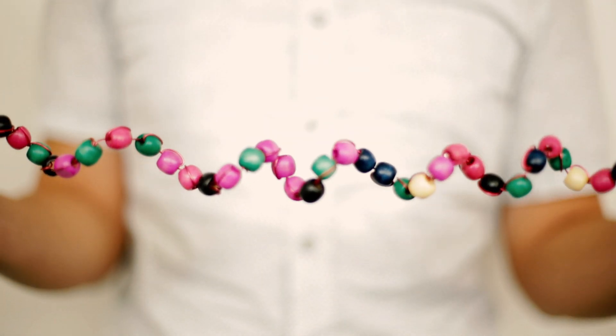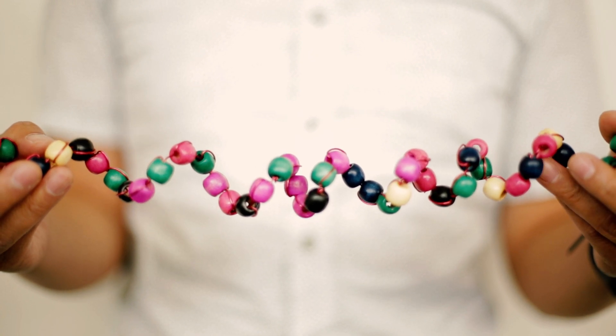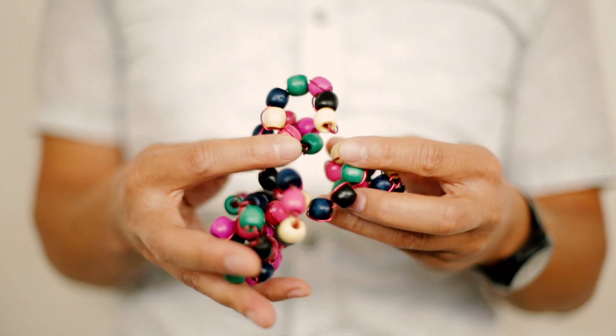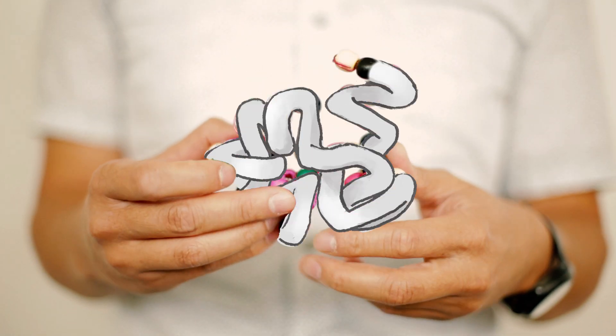When a protein folds up, you get a long, tangled piece of spaghetti with all these different chemical functionalities on it. It's not exactly like spaghetti, because its 3D shape evolved over billions of years to do very specific jobs.